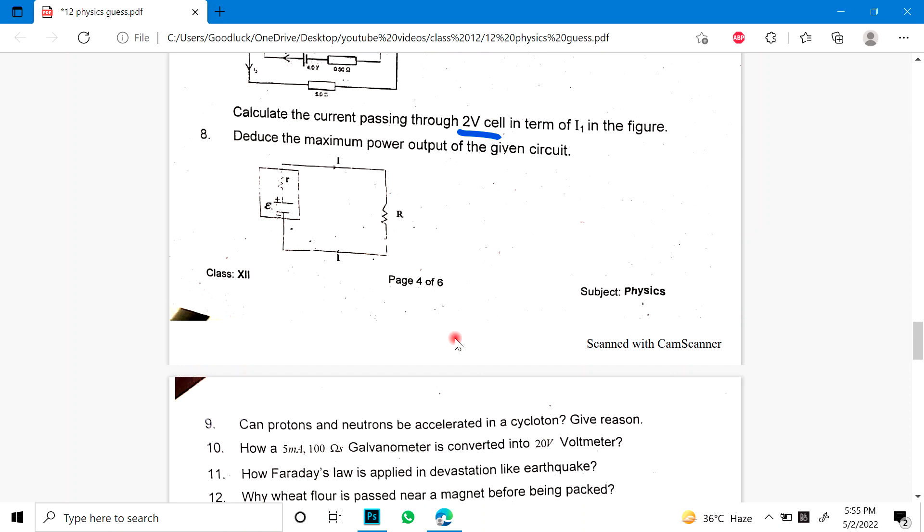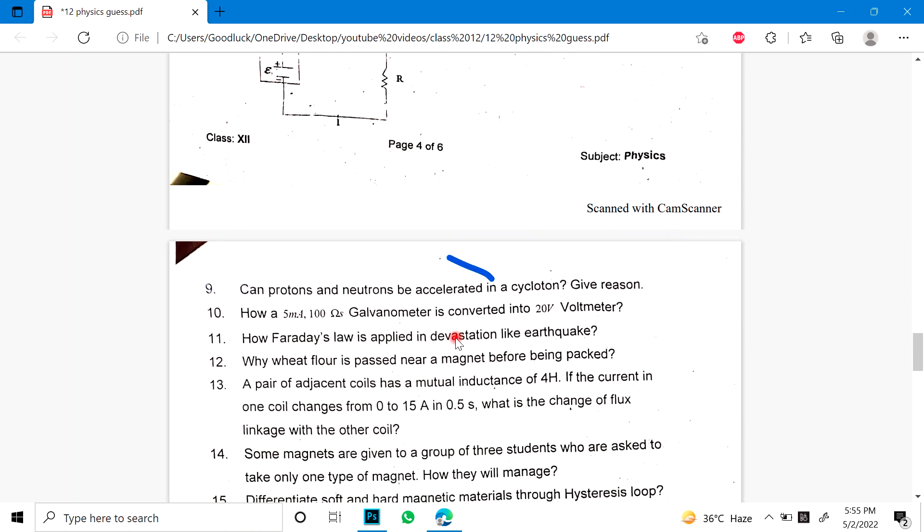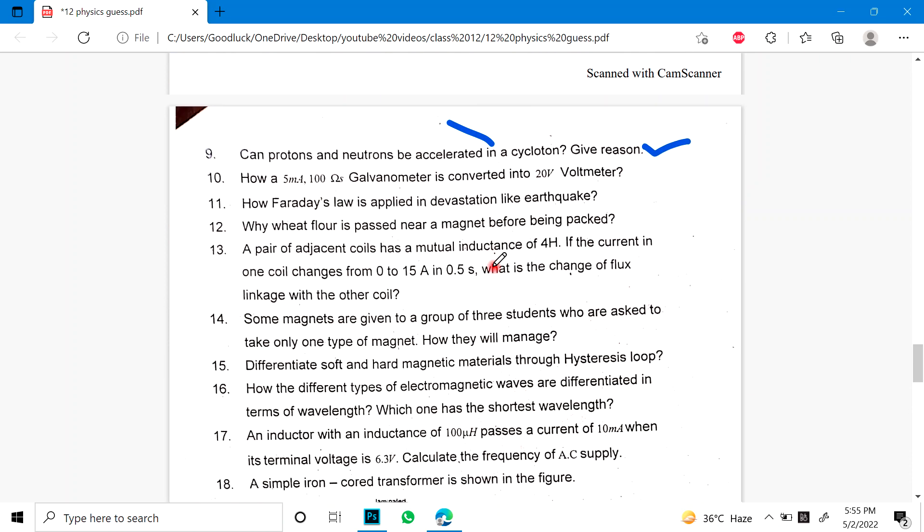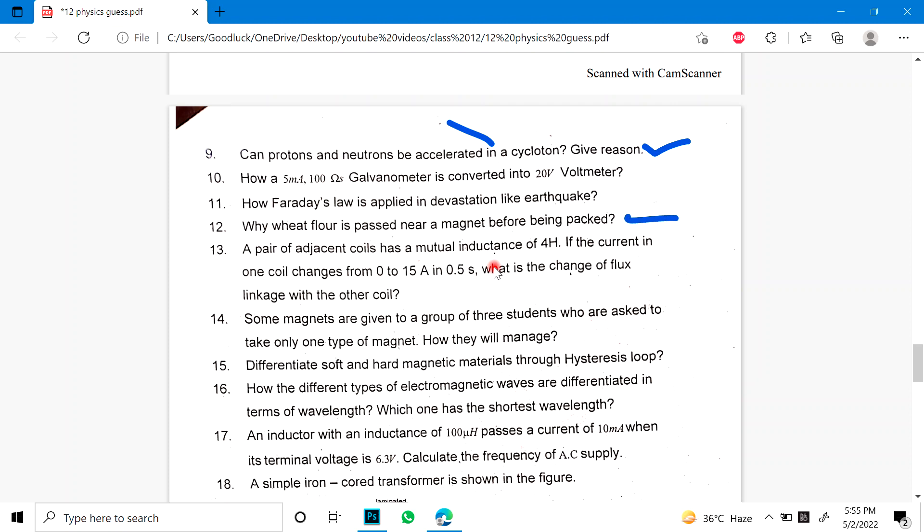8: Deduce the maximum power output from the given diagram. 9: Can protons and neutrons be isolated in a cyclotron? Give reason. 10: How a 5 mA and 100 ohms galvanometer is converted into 20 volt meter. 11: How Faraday law is applied in devastation like earthquake. 12: Why wheat flour is passed near a magnet before being packed?